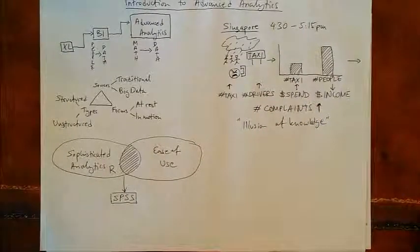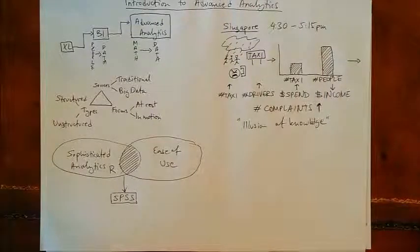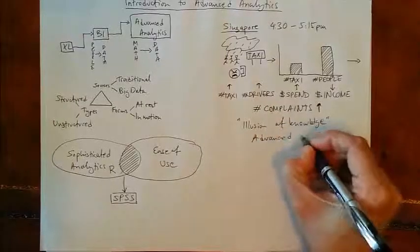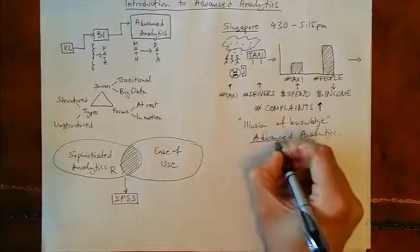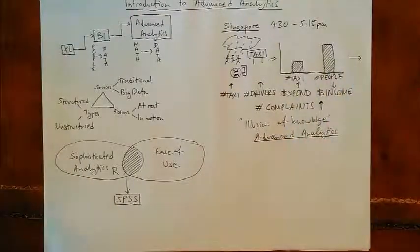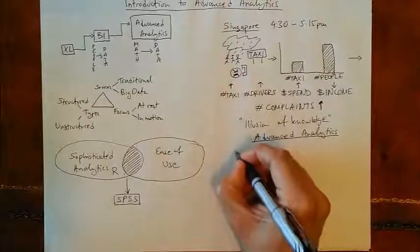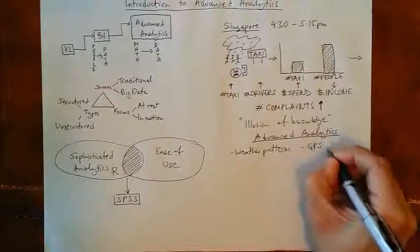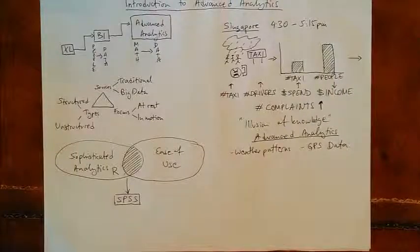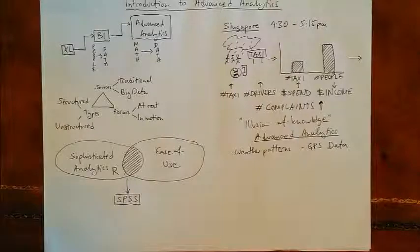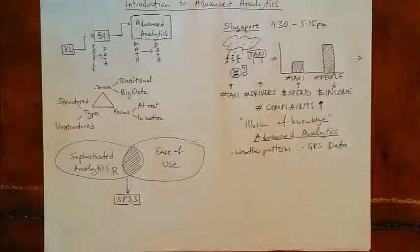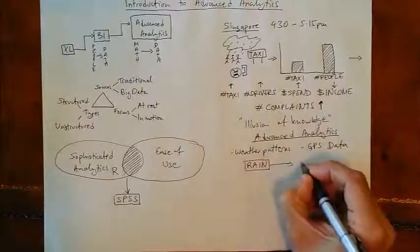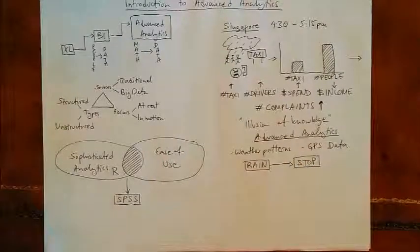At this point the city did not know what to do. They took this problem to the university in Singapore, and they found a data scientist, a professor, who took up the project. And he used advanced analytics. He not only looked at the obvious data points that the city had already looked at, but he looked at many other variables including weather patterns and GPS data. Every cab in Singapore has a GPS chip, and the city tracks their location in real time and stores that. So by analyzing all of these different data points, he found that whenever it rained, the cabs stopped. This was an interesting finding.